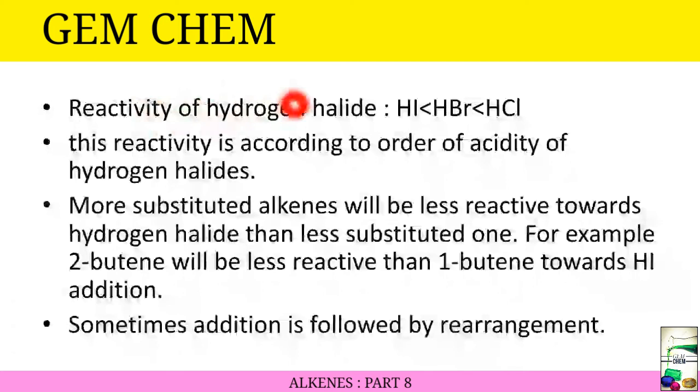The reactivity of hydrogen halide is: HI is least reactive whereas HCl is most reactive. This reactivity order is according to the order of acidity of hydrogen halides. More substituted alkenes will be less reactive towards hydrogen halide than less substituted ones. For example, 2-butene will be less reactive than 1-butene towards HI addition because more substituted alkenes are more stable, so the energy required for activation will be more.